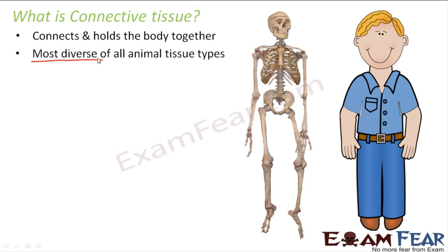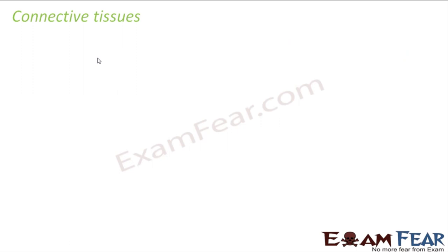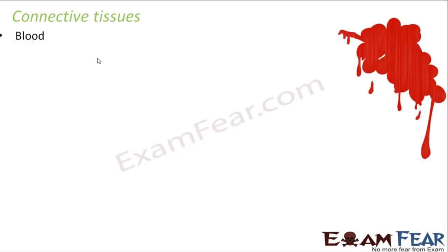Before studying each type of connective tissue, we will have a look at the structure of a connective tissue — just like we did for epithelial tissue, which had a basal side and a free side. Let us also have a look at some of the important connective tissues present in our body. The first one we will talk about is blood.